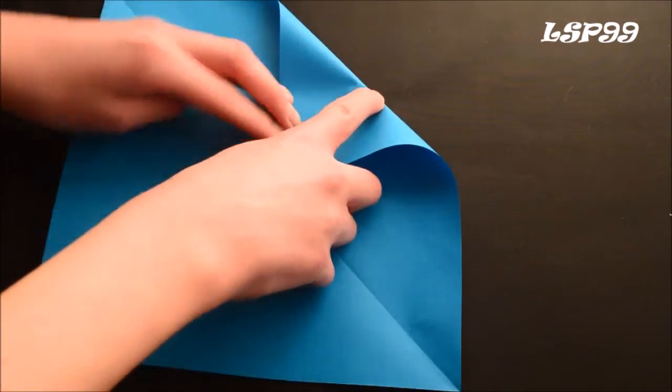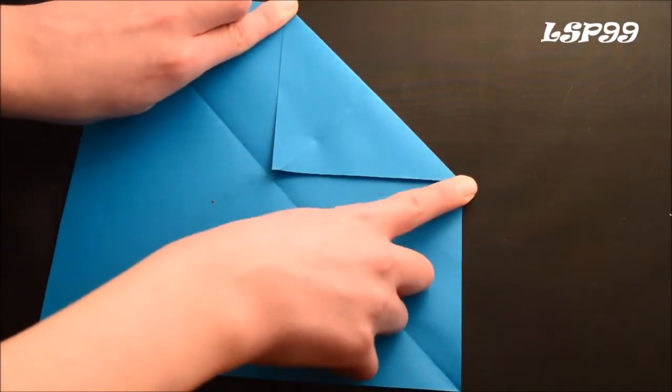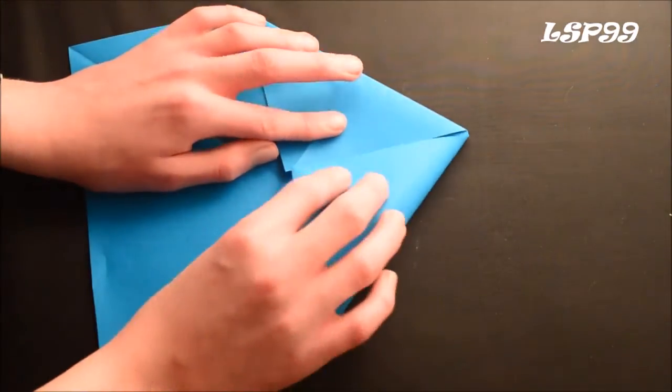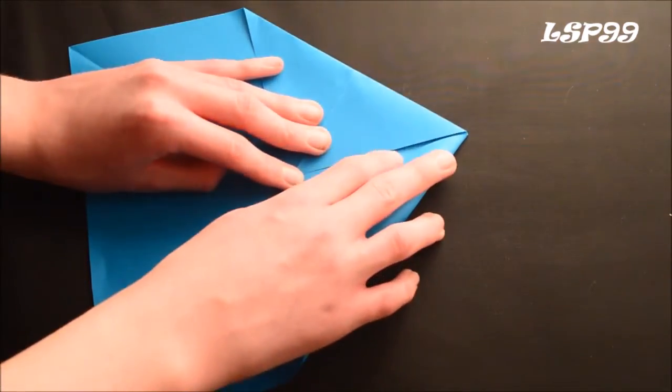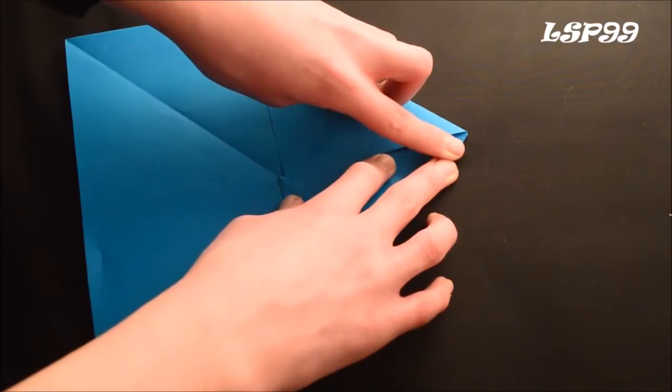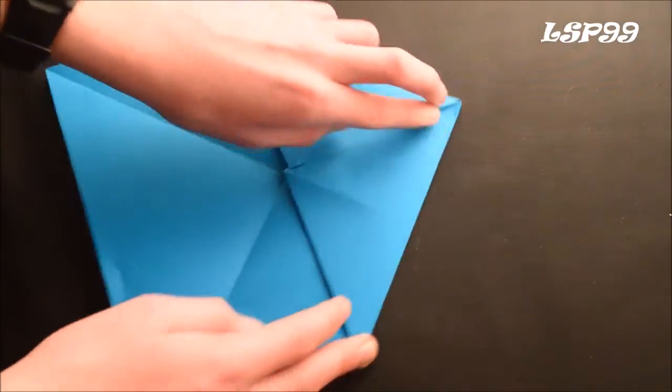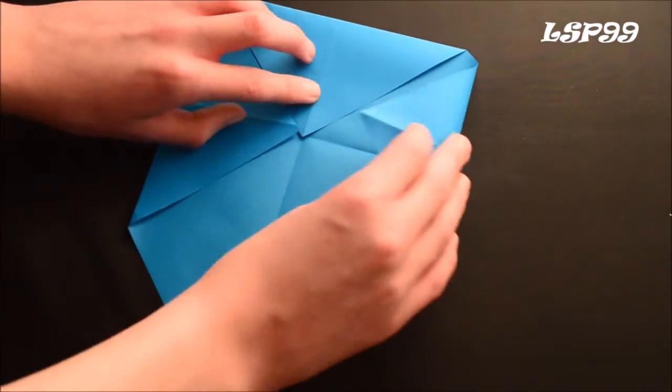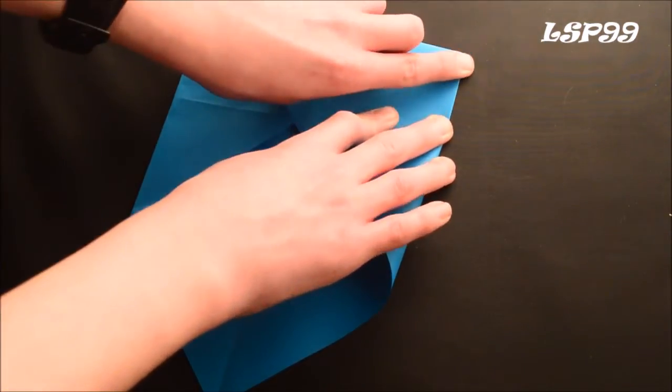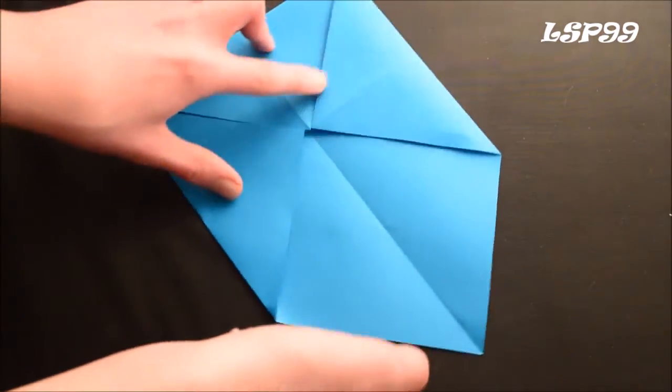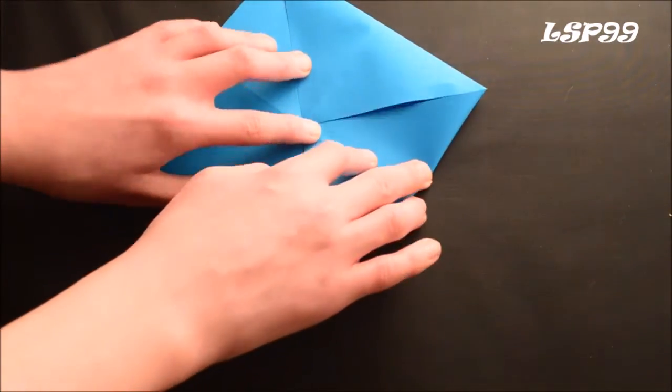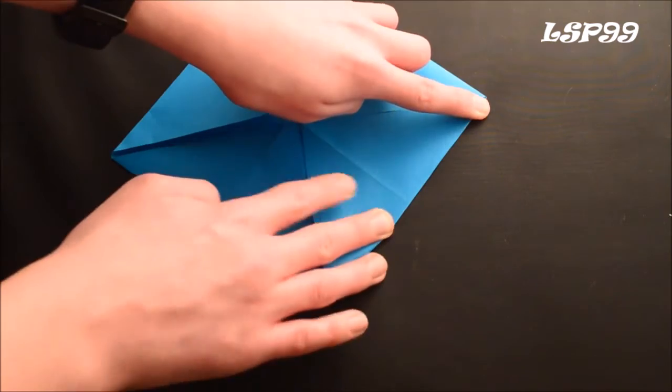So you fold that in, like this. And again, this point into the middle. Try and get it as neat as possible. Try and get a nice point on each corner, but I don't think that's going to happen with me. Just my luck. And fold that in. And again, final one, fold that point into the middle again. And you're going to get a smaller square like this.